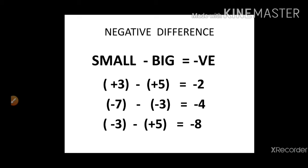For a negative difference, it's the reverse: if we subtract a bigger number from a smaller number (small minus big), we always get a negative answer. For example, plus 3 minus plus 5 — smaller positive minus bigger positive — gives a negative answer. Also, any negative minus any positive always gives a negative. So the three cases for negative difference are: smaller positive minus bigger positive, smaller negative minus bigger negative, or any negative minus any positive.